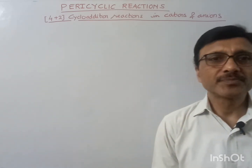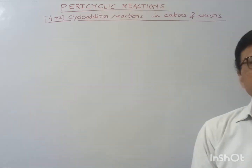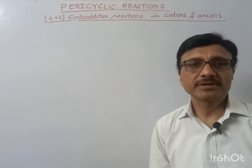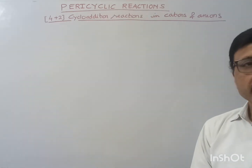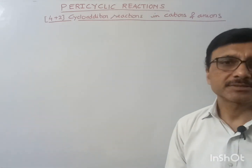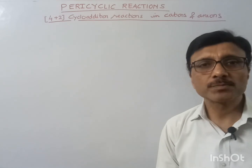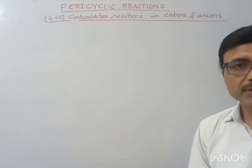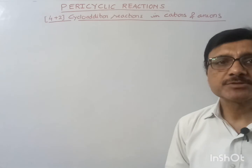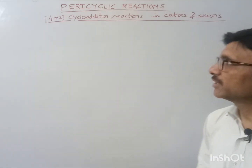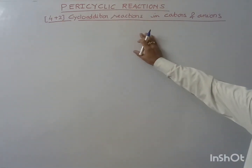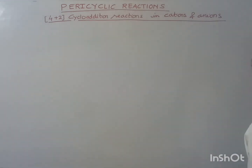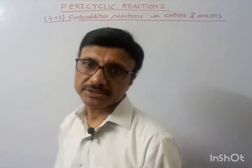Hello friends, welcome you all. In paracyclic reaction, today I will explain 4 plus 2 cycloaddition reaction in cations and anions. I have already discussed the 4 plus 2 cycloaddition reaction — that is the Diels-Alder reaction — which takes place under thermal condition. So here, this 4 plus 2 cycloaddition reaction in cations and anions also takes place under thermal condition.